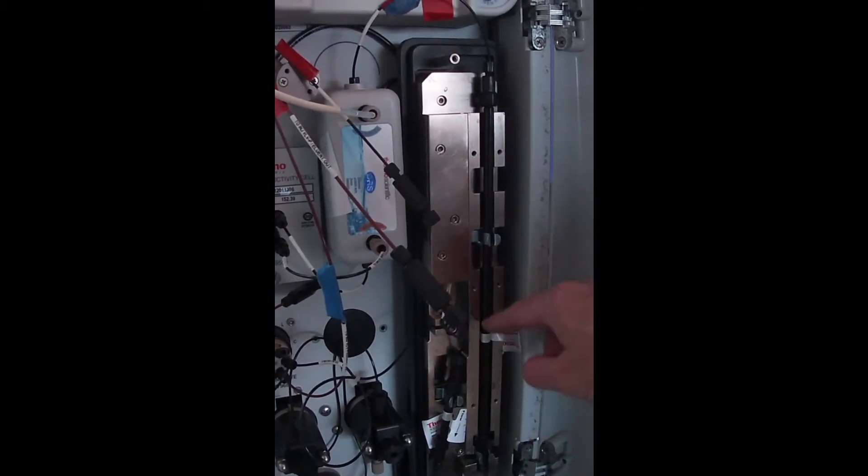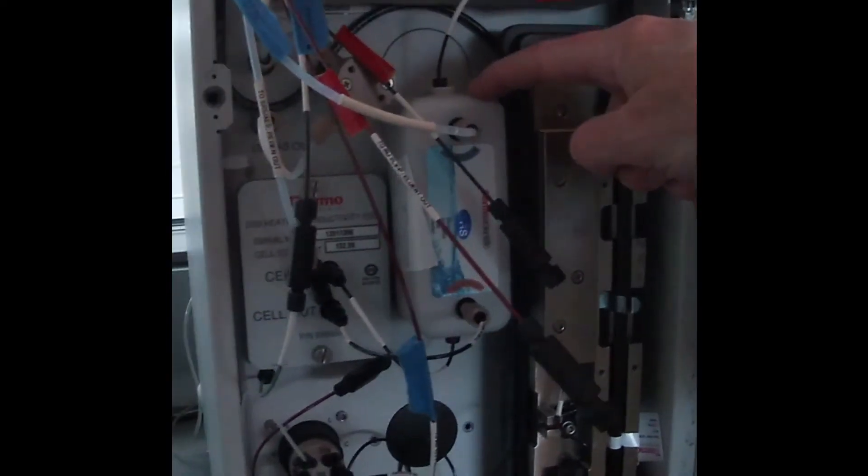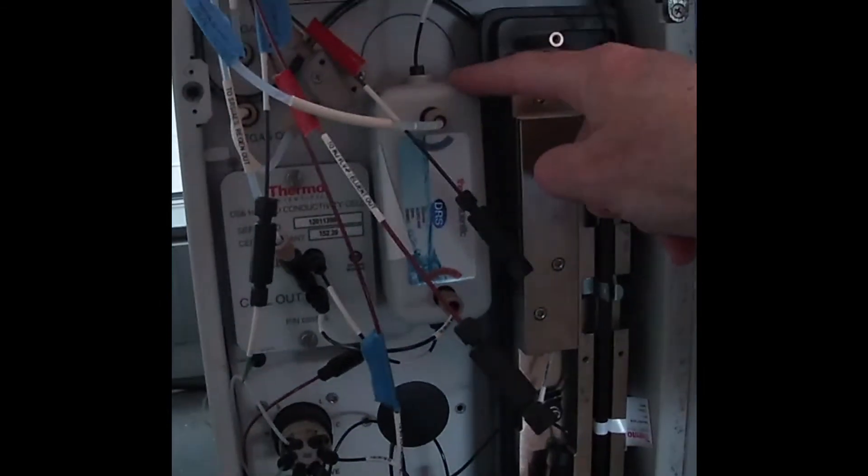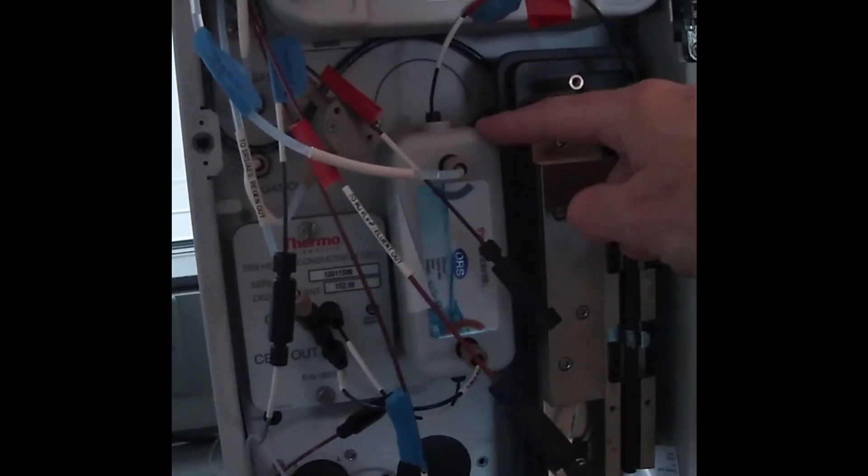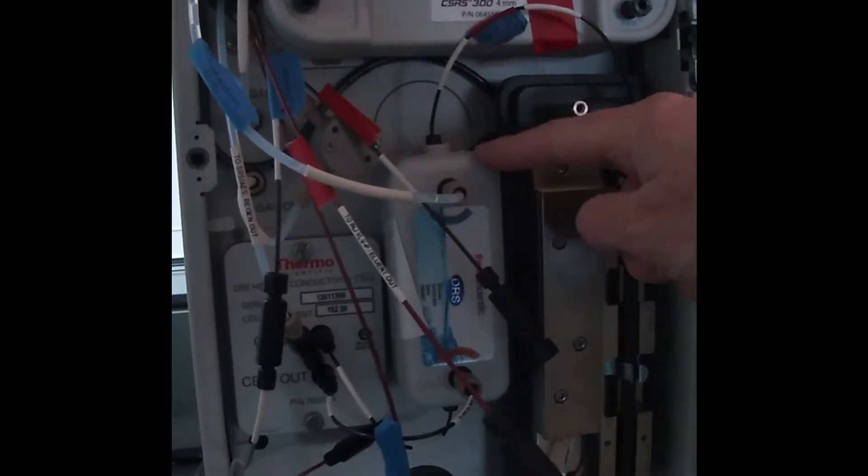So here we do where our anions separate and then they actually come to here. This is our suppressor. When our ions come in here, we actually have a membrane that allows the potassium from the potassium hydroxide to get exchanged with protons.